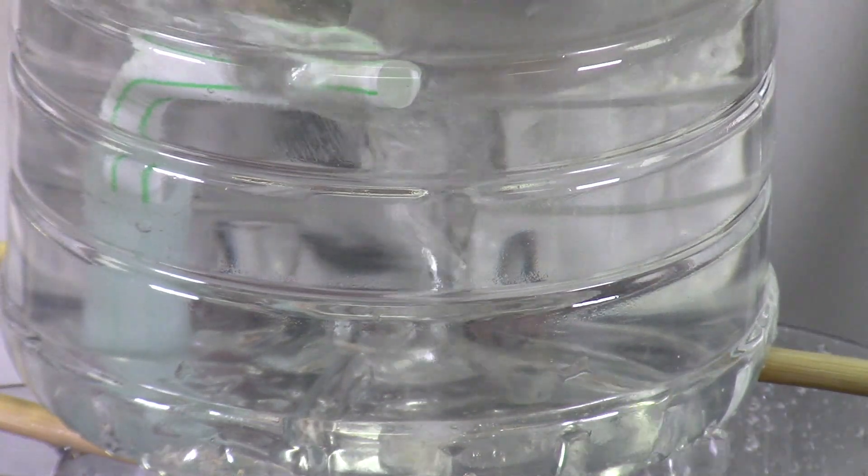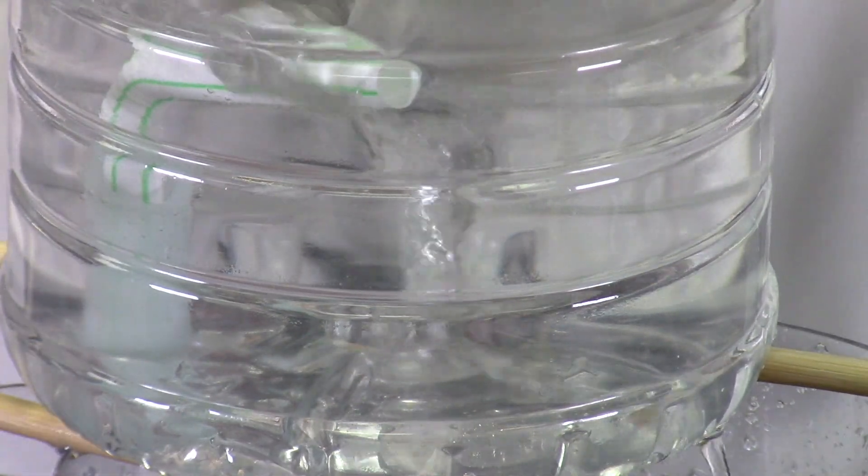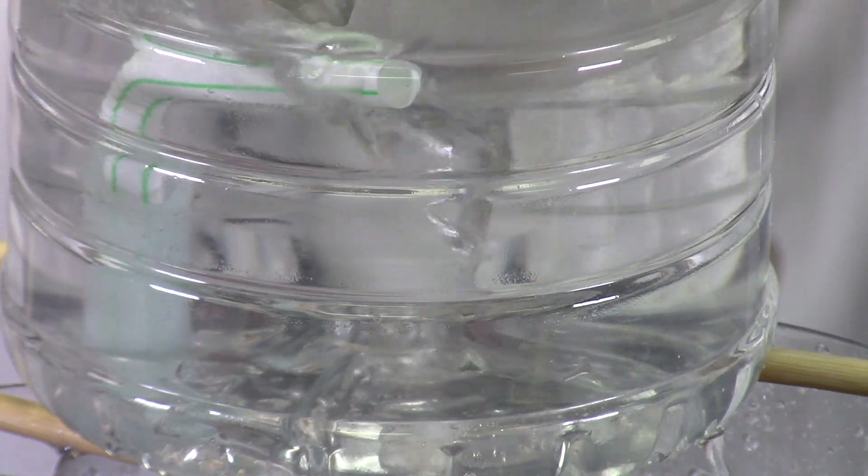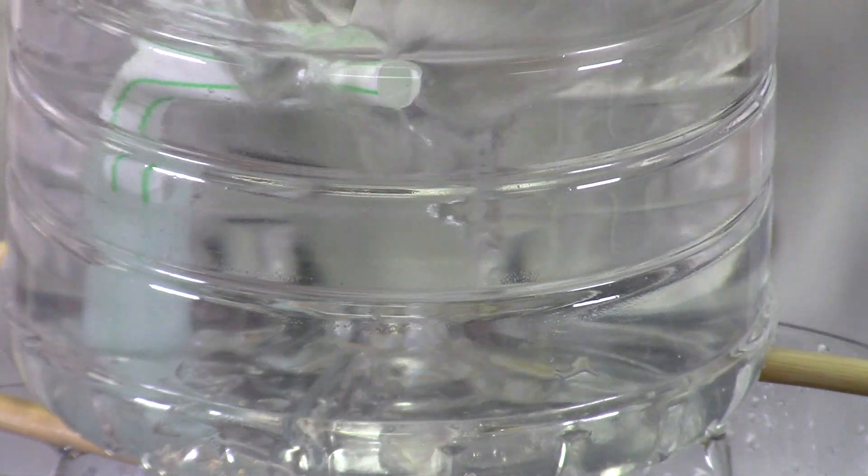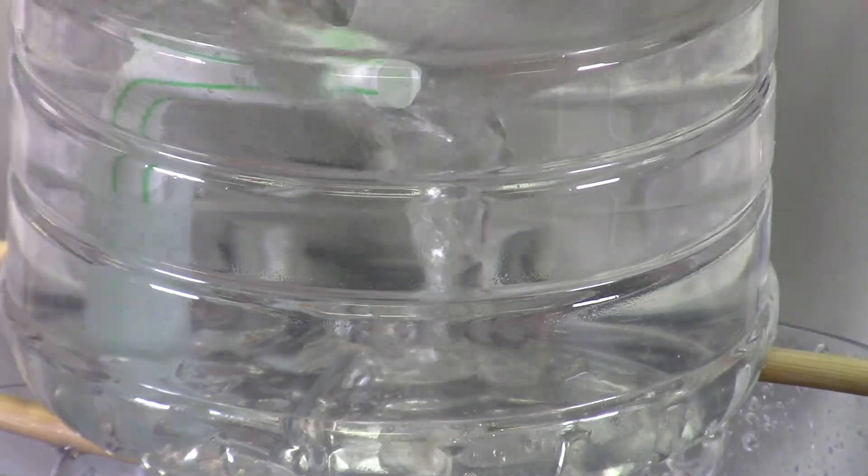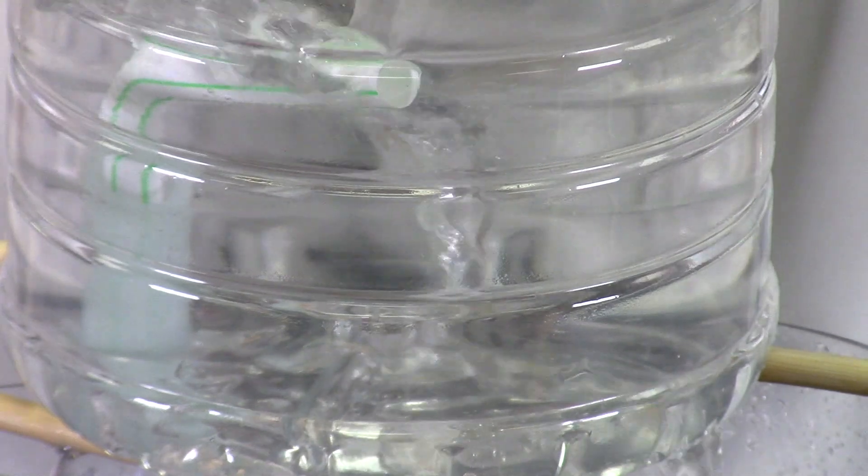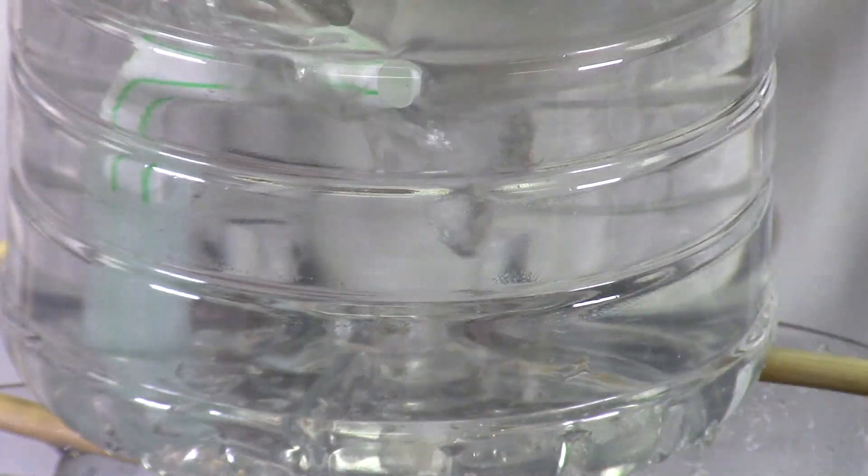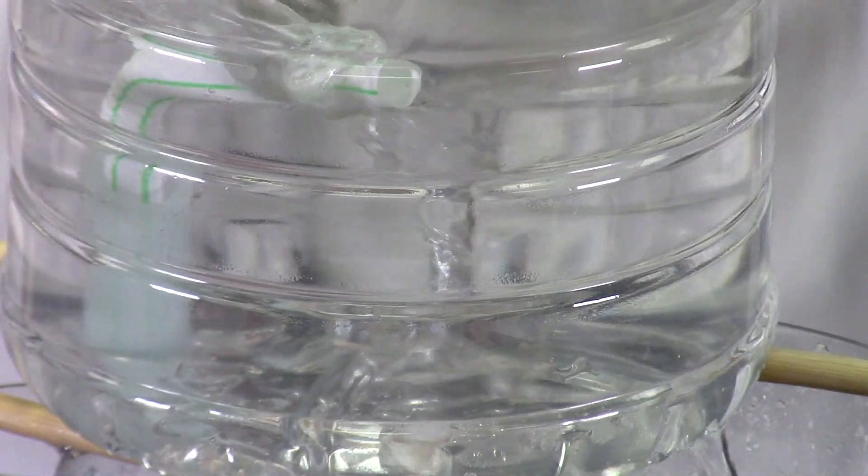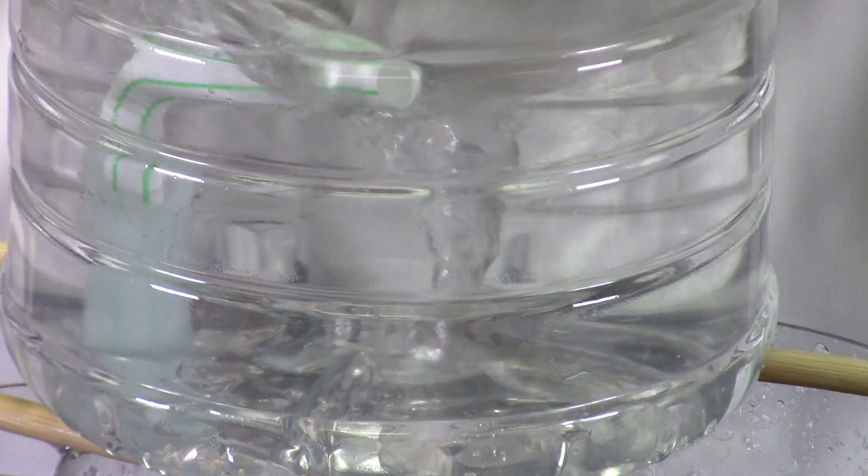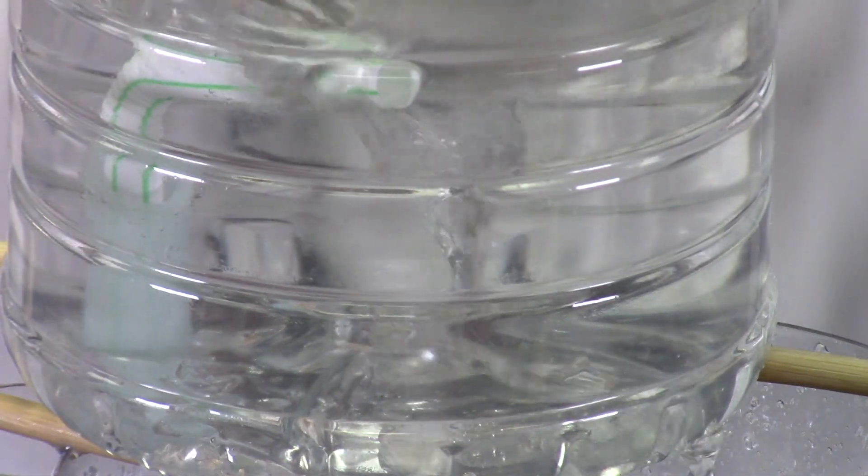Now in nature it takes just the right circumstances for a tornado to form, and you might find it takes just the right circumstances for your tornado to form in this bottle. If your drain hole is too big, your tornado won't form. If the drain hole is too small, the tornado won't form. If your straw is too big or too small, the tornado won't form. It takes just the right circumstances.